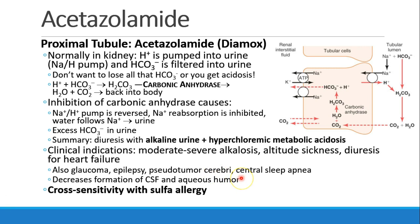So when would we use something like acetazolamide? Well, in the uncommon situation where patients have severe alkalosis, this would be a good way to get rid of excess alkaline and become more acidotic. It's also used in the treatment of altitude sickness and sometimes as a diuretic for patients in heart failure. We also see acetazolamide being used in treatment of a variety of different conditions like glaucoma, epilepsy, pseudotumor cerebri, and central sleep apnea. The central sleep apnea indication may be because it makes people more acidotic and may stimulate breathing. The CSF formation and aqueous humor formation is actually decreased by acetazolamide, so that may help with glaucoma and pseudotumor cerebri. It's said that there can be some cross-sensitivity with sulfa allergy and acetazolamide.